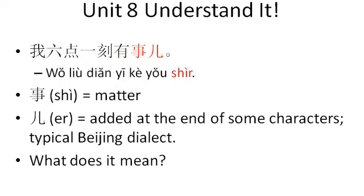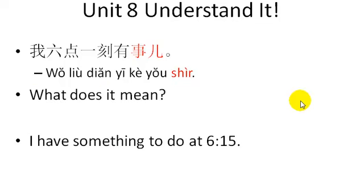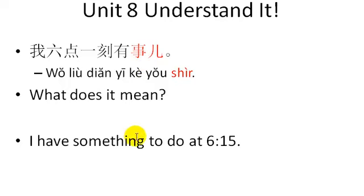Can you decipher the meaning of 我六点一刻有事? The meaning is: I, 6:15, have a matter or issue — something to do. So an appropriate English translation would be: 'I have something to do at 6:15.'